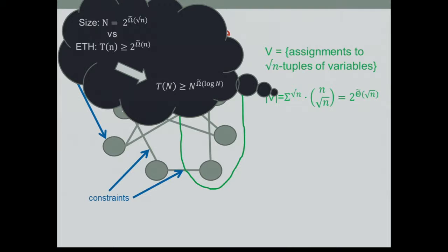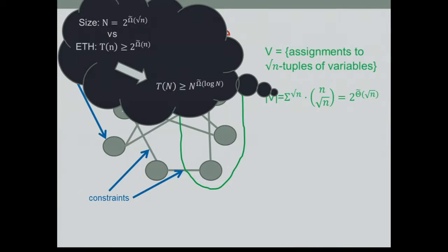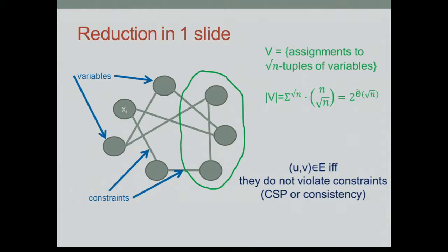ETH assumes that we need 2-to-the-n time to solve it, so the running time in terms of capital N is N to the log N, which is what we expect. Our edges are the simplest choice: if you have two root-n tuples of assignments, first you want them to be consistent — if two vertices give an assignment to the same variable, it should be the same assignment. And if they assign two variables that have a CSP constraint, we want them to satisfy that constraint. For completeness, we have a clique: just pick a satisfying assignment, and there are n-choose-root-n tuples that correspond to this assignment. This is the entire reduction — just one slide, as promised.